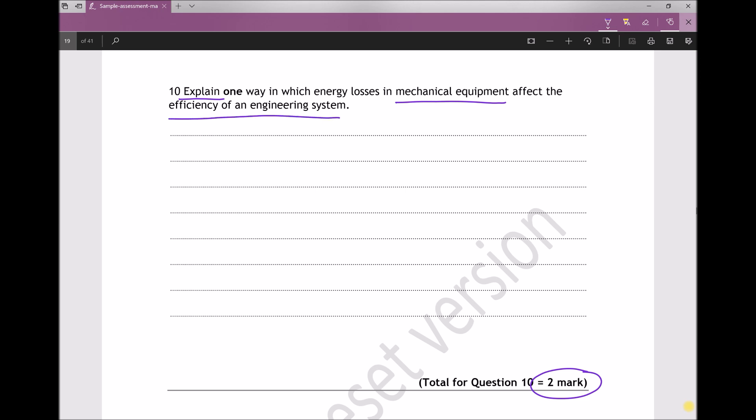Let's read that one more time: explain one way in which energy losses in mechanical equipment affect the efficiency of an engineering system.